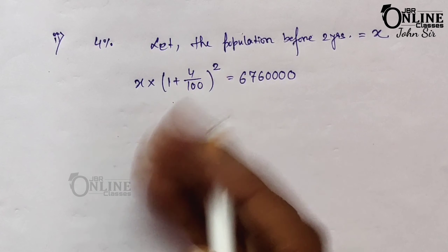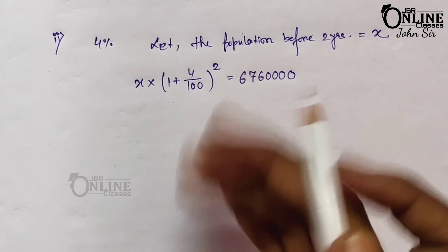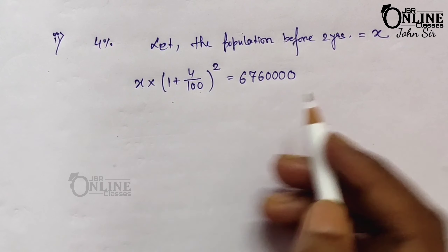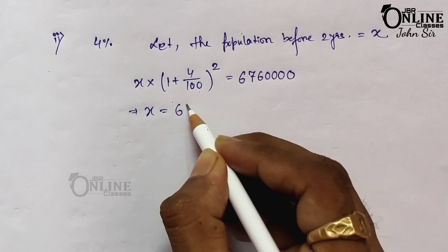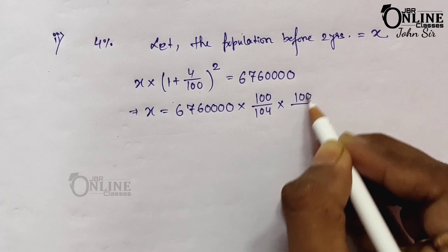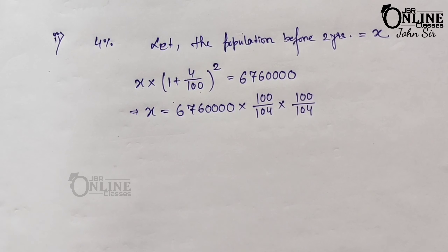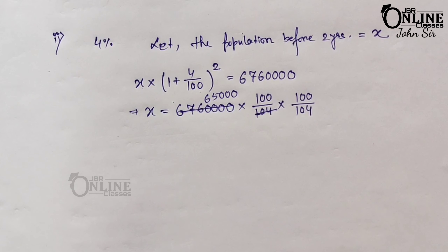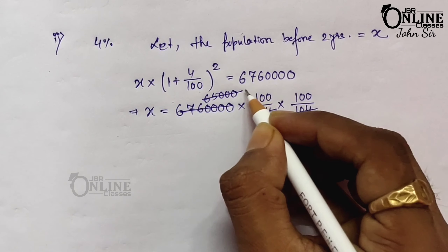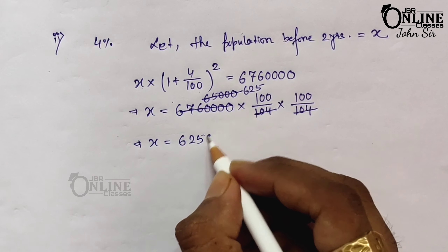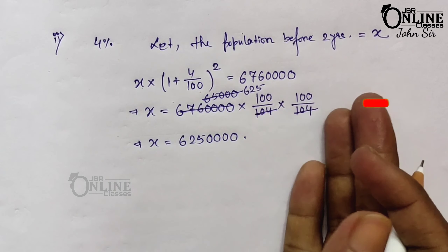Since x into (1 + 4/100) squared equals the present population 6,76,00,000, we get x equals 6,76,00,000 into (100/104) into (100/104). Dividing 6,76,00,000 by 104 and again by 104 gives x equals 6,25,00,000 — this is the population before two years.